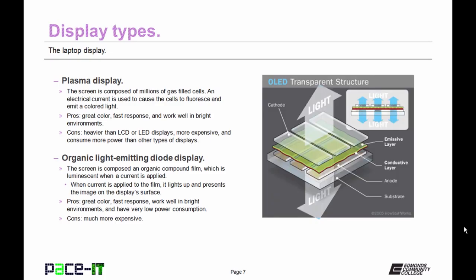Then there are organic light emitting diode displays, the OLED display. In this situation, the screen is composed of an organic compound film which is luminescent when a current is applied to it. When a current is applied to the film, it lights up and presents the image on the display's surface. On the benefit side, they have great color, on par if not better than most plasma displays. They also offer very fast response. They're a quick display type. They work well for games. They also work well in bright environments because they emit their own light and they have extremely low power consumption, allowing for much longer run time on batteries.